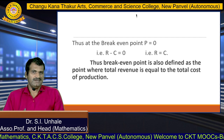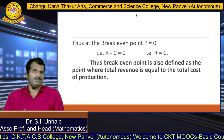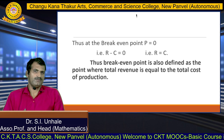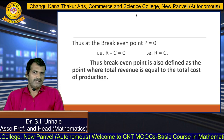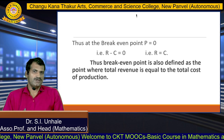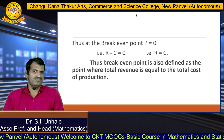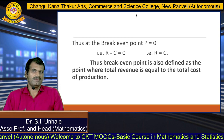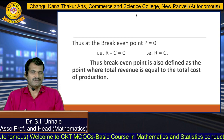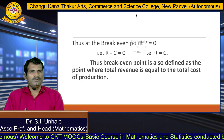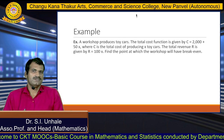So we define the breakeven point as the point where profit is 0, meaning the point where total revenue and total cost are equal is called the breakeven point. Now we will see one example of this breakeven point.